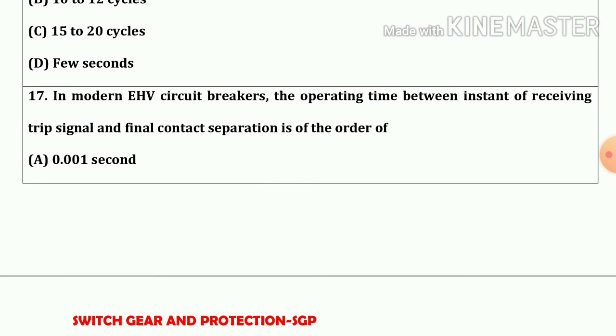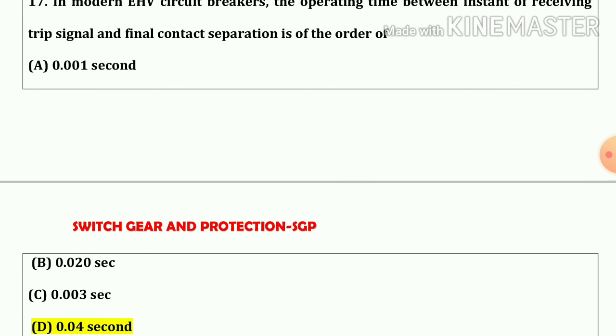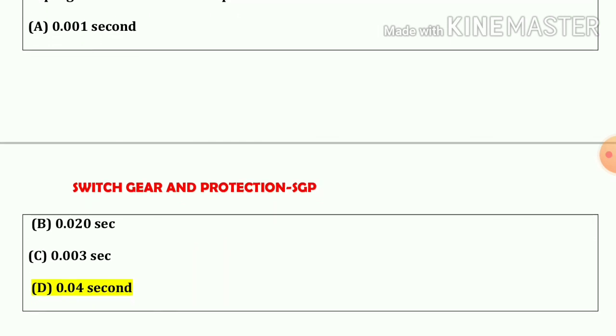Question number 17. In modern EHV circuit breakers the operating time between the instant of receiving trip signal and final contact separation is in the order of 0.04 second. So our answer is option D.